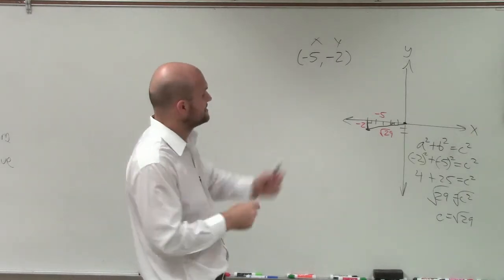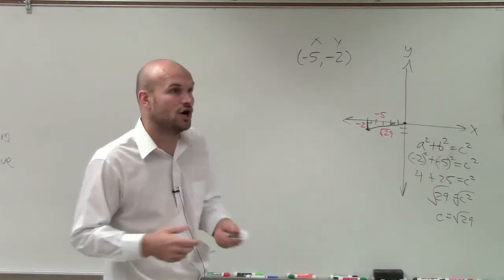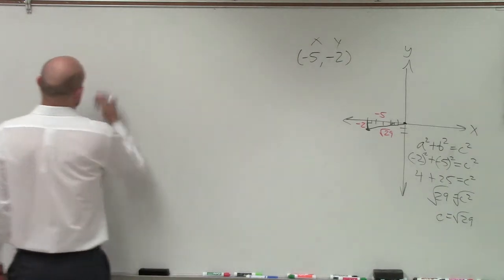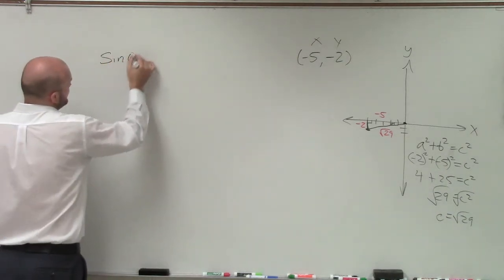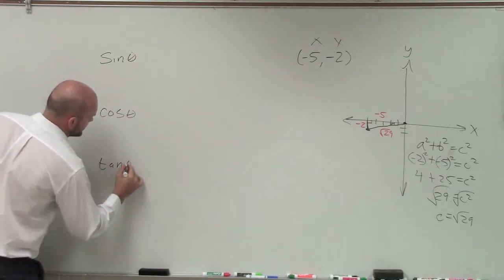So now, ladies and gentlemen, you can see that I have these three lengths of a triangle. So now I can evaluate all six of my trigonometric terms. Yay, right? All right, so let's do the basic ones that we first learned. Sine of theta, cosine of theta, and tangent of theta.